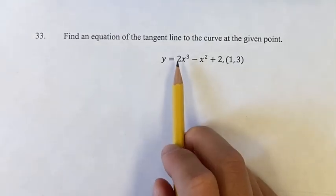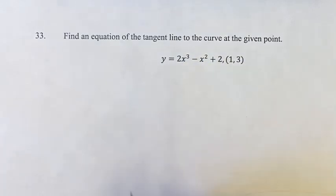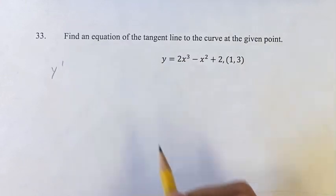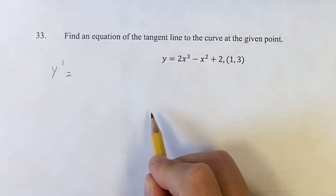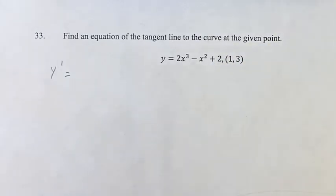Well, if you notice, we can see this as a power function, subtracting a power function, and then adding a constant. So our derivative, y prime, is going to be the derivative of this, minus the derivative of this, plus the derivative of the constant, which is just 0.